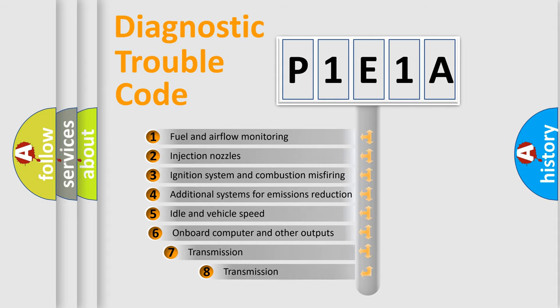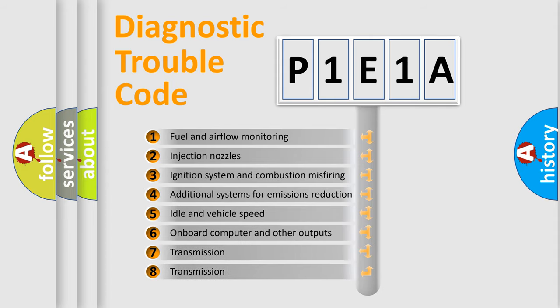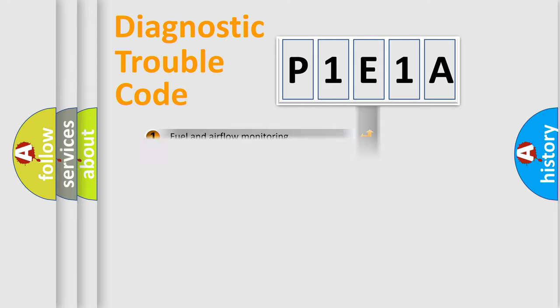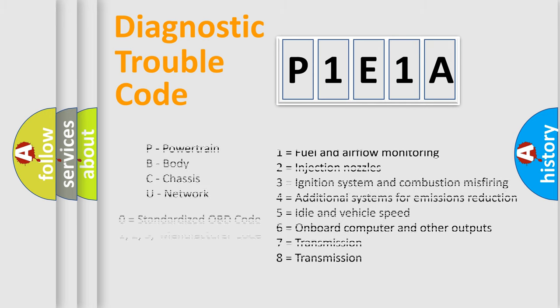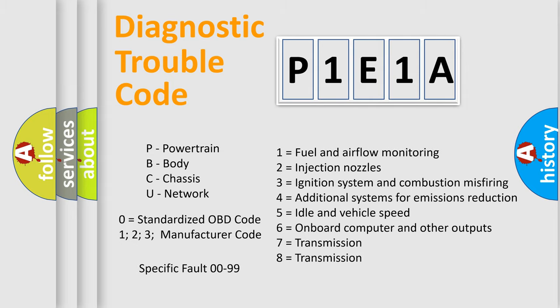The third character specifies a subset of errors. The distribution shown is valid only for the standardized DTC code. Only the last two characters define the specific fault of the group. Let's not forget that such a division is valid only if the second character code is expressed by the number zero.